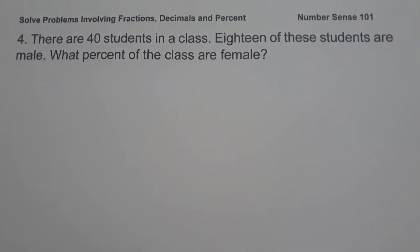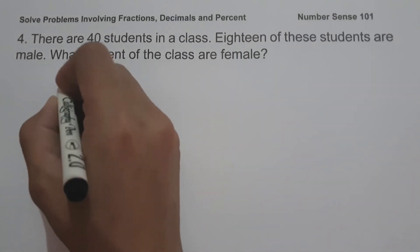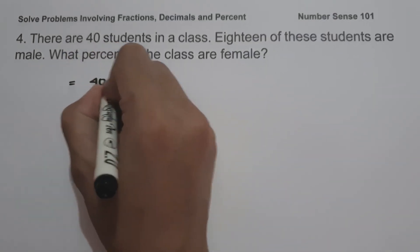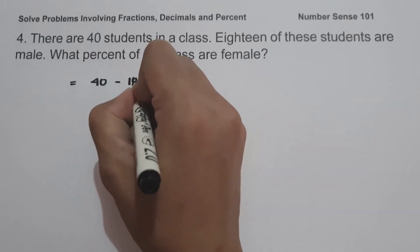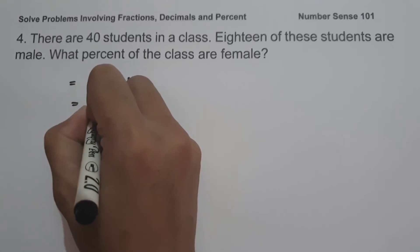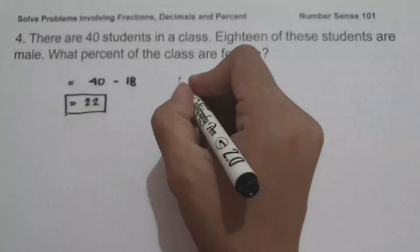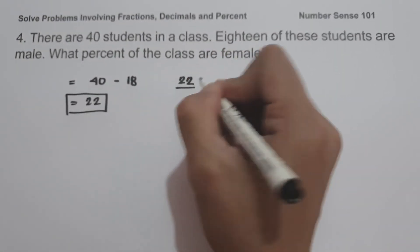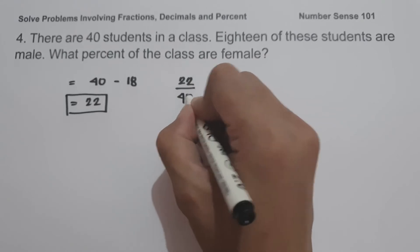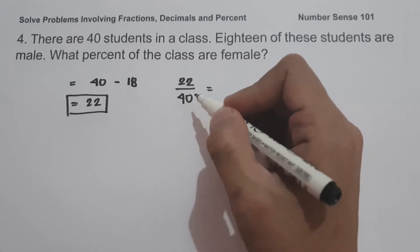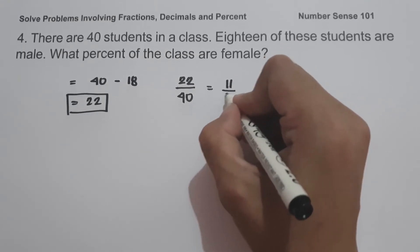On example number 4, there are 40 students in a class and 18 of these students are male. What percent of the class are female? To determine the percentage of females, since there are 40 students and 18 are male, let us find the number of female students: 40 minus 18 is 22. These are the number of females in the class. So we have 22 over 40, and since 22 and 40 are both divisible by 2, we can write this as 11 over 20.